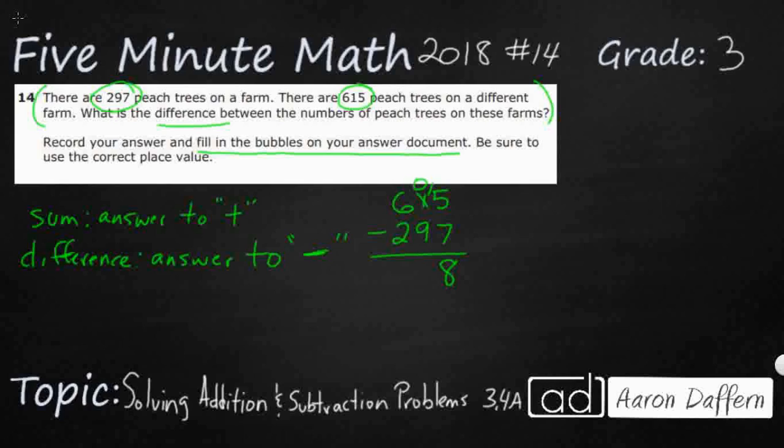0 minus 9. I know you might be tempted to think it's 9, but it's not. You cannot take 9 from nothing. So we need to go to these hundreds places. Take 100, which leaves 5. We're going to break up that 100 into 10 tens. Instead of 0 tens, I've got 10 tens. 10 tens minus 9 tens is 1. And 5 hundreds minus 2 hundreds is 3 hundreds.